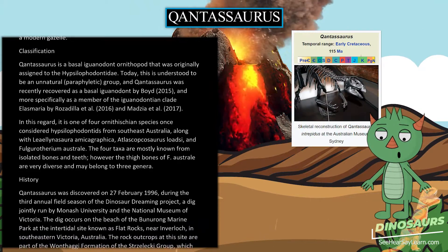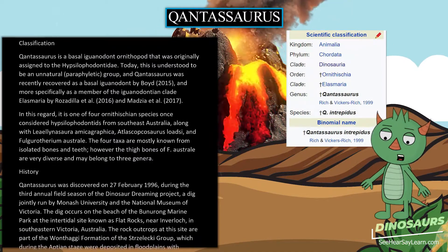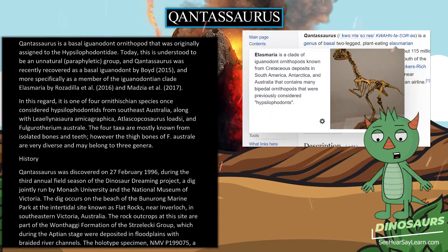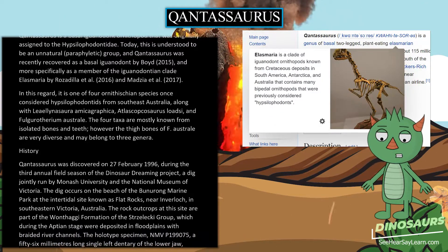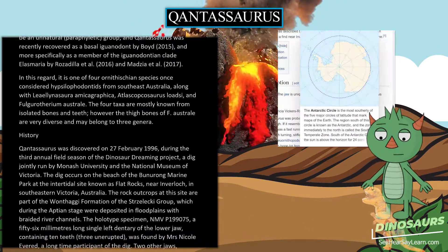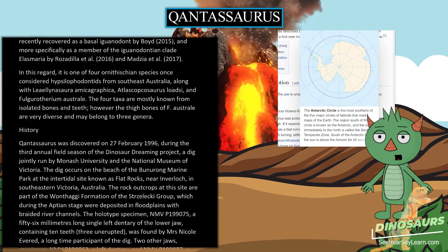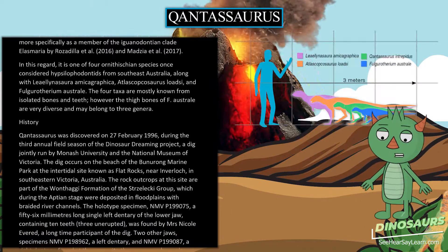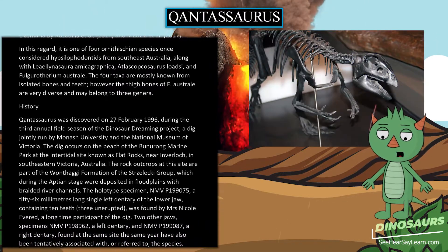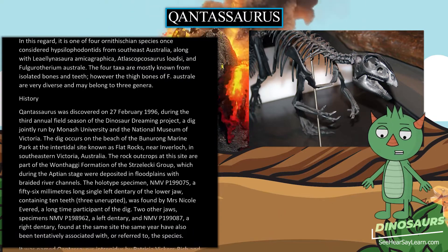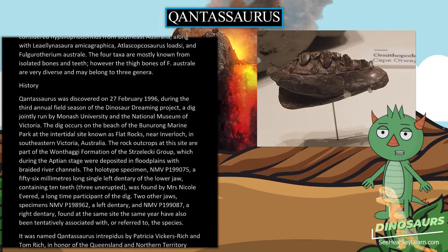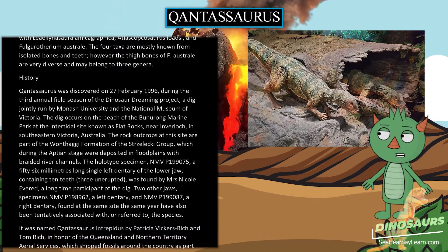Qantasaurus was discovered on February 27, 1996, during the third annual field season of the Dinosaur Dreaming Project, a dig jointly run by Monash University and the National Museum of Victoria. The dig occurs on the beach of the Bunurong Marine Park at the intertidal site known as Flat Rocks, near Inverloch, in southeastern Victoria, Australia. The rock outcrops at this site are part of the Wonthaggi Formation of the Strzelecki Group, which during the Aptian stage were deposited in floodplains with braided river channels. The holotype specimen, NMV P199075, a 56mm long single left dentary of the lower jaw containing ten teeth, three unerupted, was found by Mrs. Nicole Everett, a long-time participant of the dig.